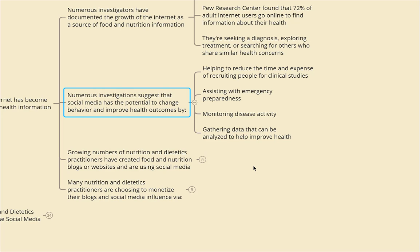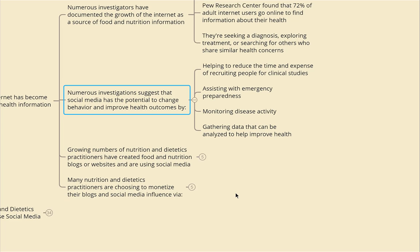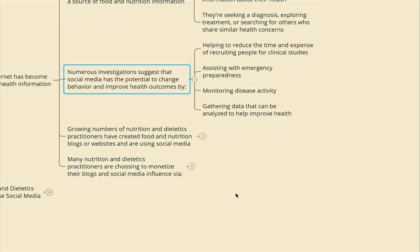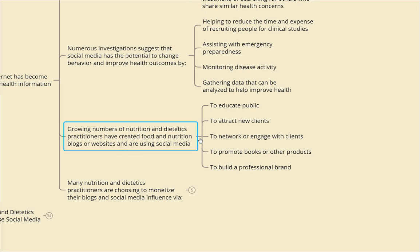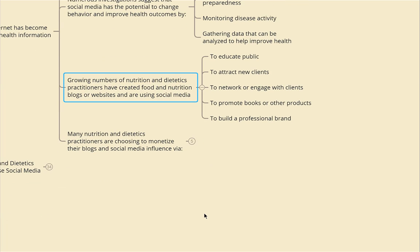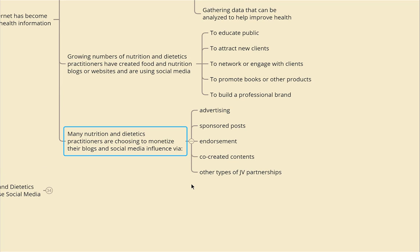Growing numbers of nutrition and dietetic practitioners have created food and nutrition blogs and websites, using social media to educate the public, attract new clients, network, engage with clients, promote books or products, and build a professional brand. Many practitioners are choosing to monetize their blog and social media influence via advertising, sponsored products, endorsements, co-created content, and other types of joint venture partnerships.